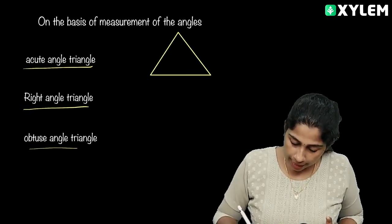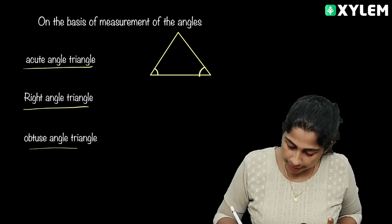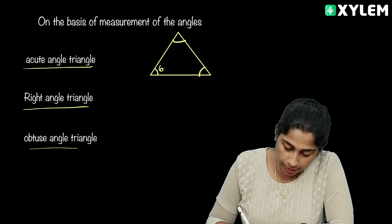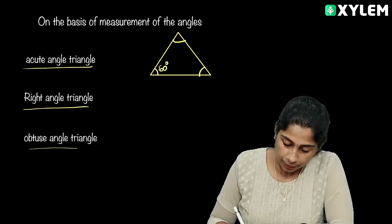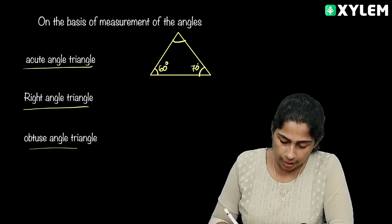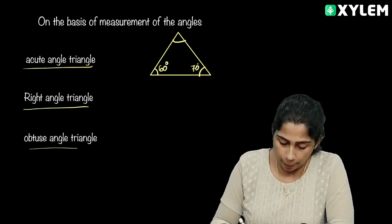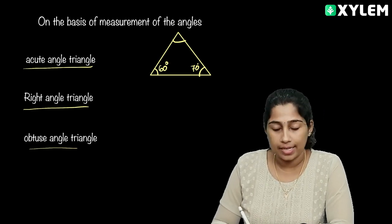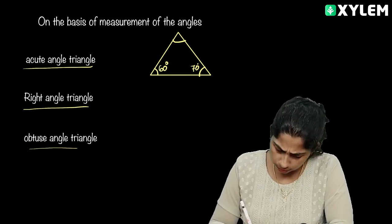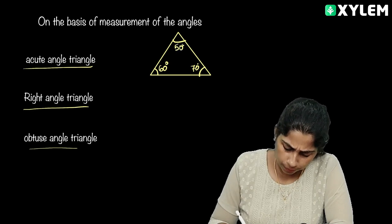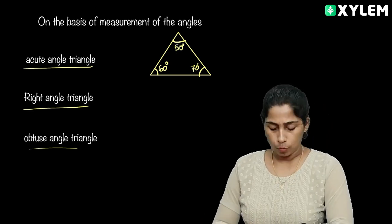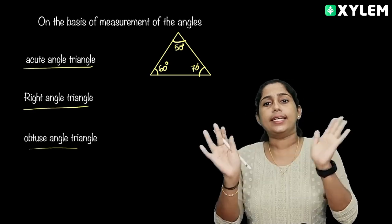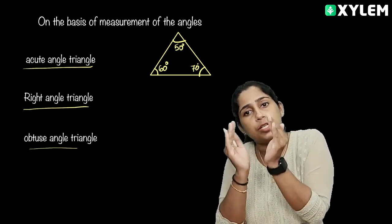For the acute angle triangle example: all angles are less than 90 degrees. We measure this angle — here we get 60 degrees, here we get 70 degrees, and here we get 50 degrees. All are less than 90 degrees: 60, 70, 50 — so it is an acute angle triangle.